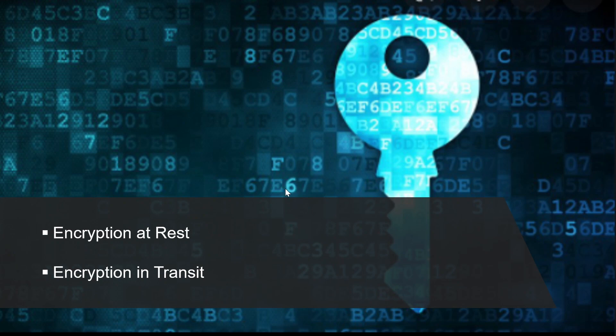Encryption may protect data at rest or in transit. When it comes to encryption at rest, data at rest is the data that's stored on a physical device, such as a server. It may be stored in a database or a storage account. Encryption of data at rest ensures that the data is unreadable without the keys and secrets needed to decrypt it. For example, if an attacker obtained hardware with encrypted data and didn't have access to the encryption keys, they would be unable to read the data.